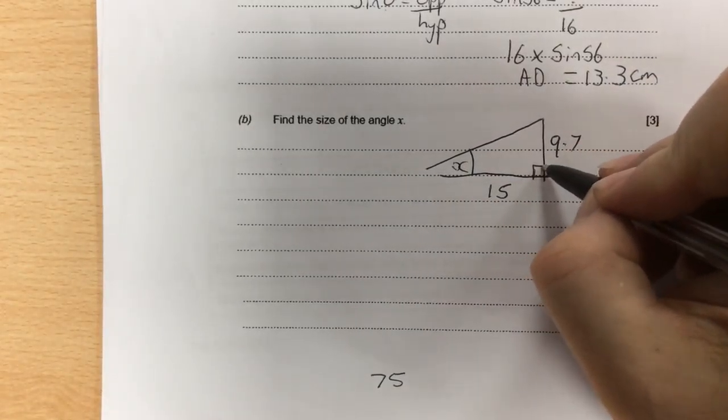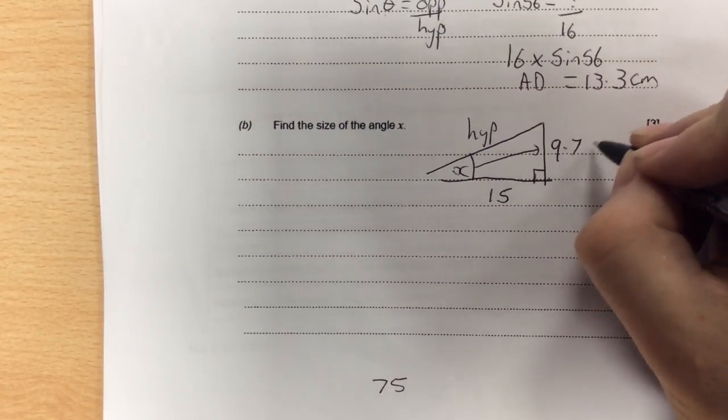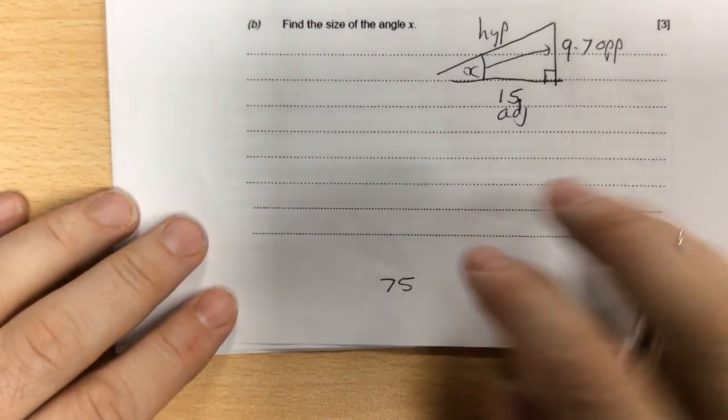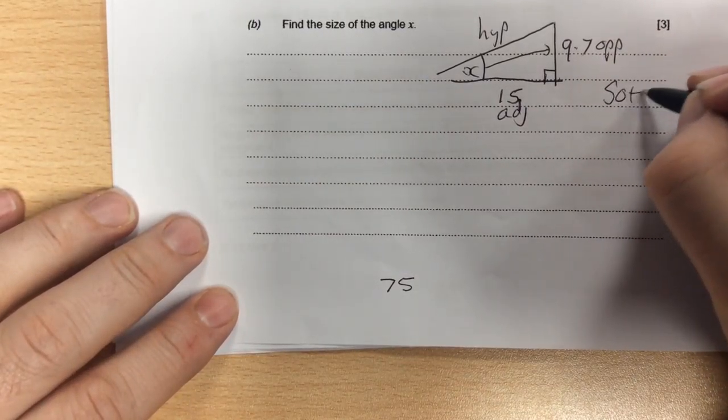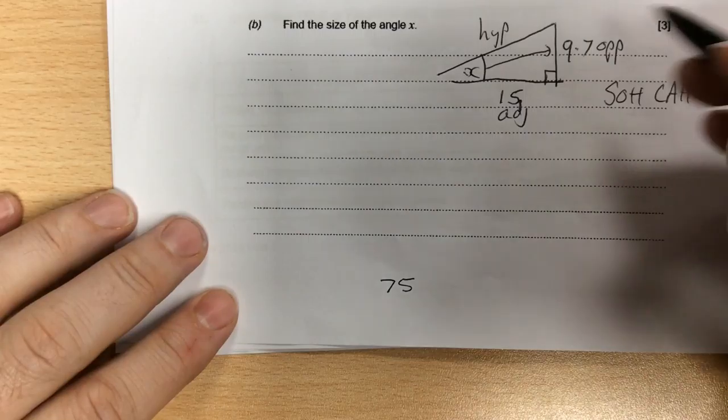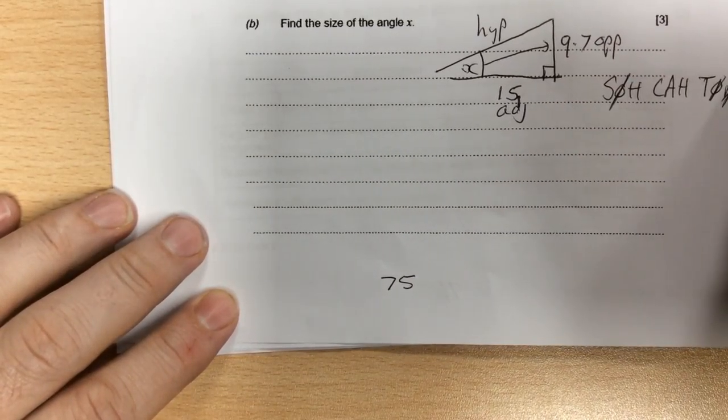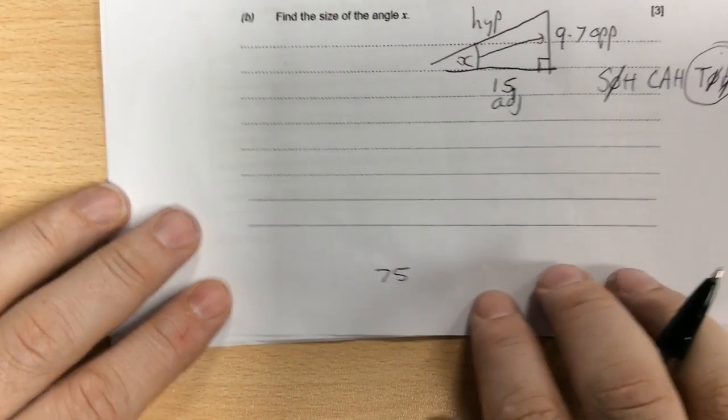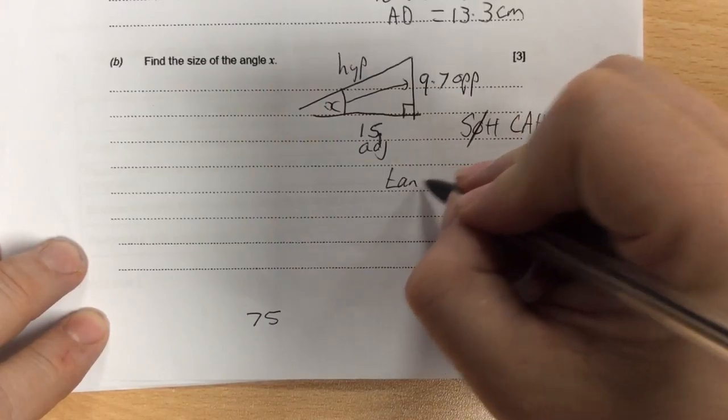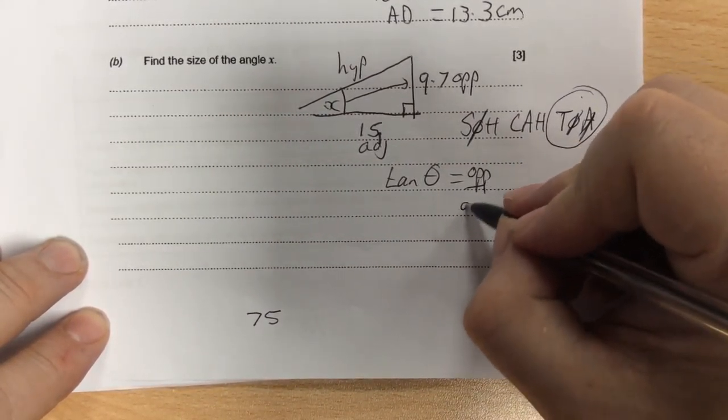I label the triangle. Opposite the right angle is the hypotenuse. Opposite the angle is the opposite, and the third side is the adjacent. Always write down SOHCAHTOA, and tick off the sides you know. In this one, I know O for opposite and A for adjacent, so it's TOA. T represents tan, so tan of the angle is O for opposite over A for adjacent.